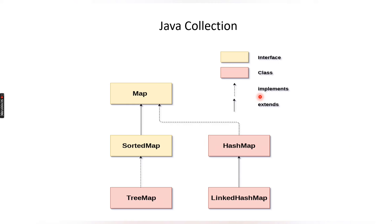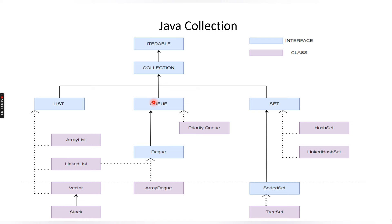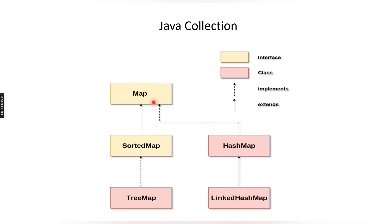Also in the Map interface, when we want to add values inside the map we need to make use of the put() method. For other classes we were using the add() method to add elements, but for the Map we need to make use of the put() method.